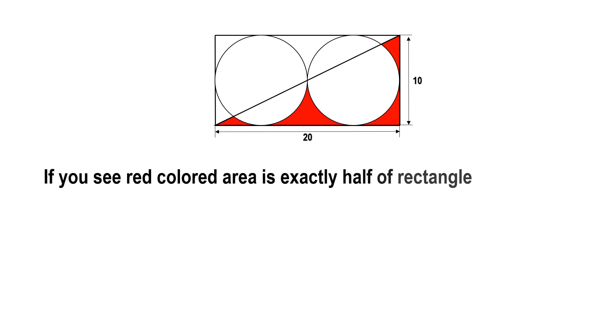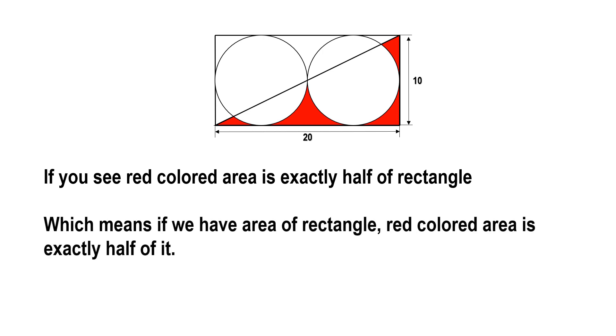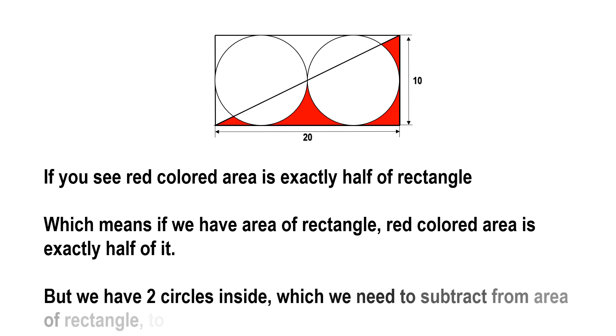Which means if we have the area of the rectangle, then the red colored area is exactly half, right? But there are two circles also inside the rectangle. What we can do: if we subtract the area of the circles from this area of the rectangle.